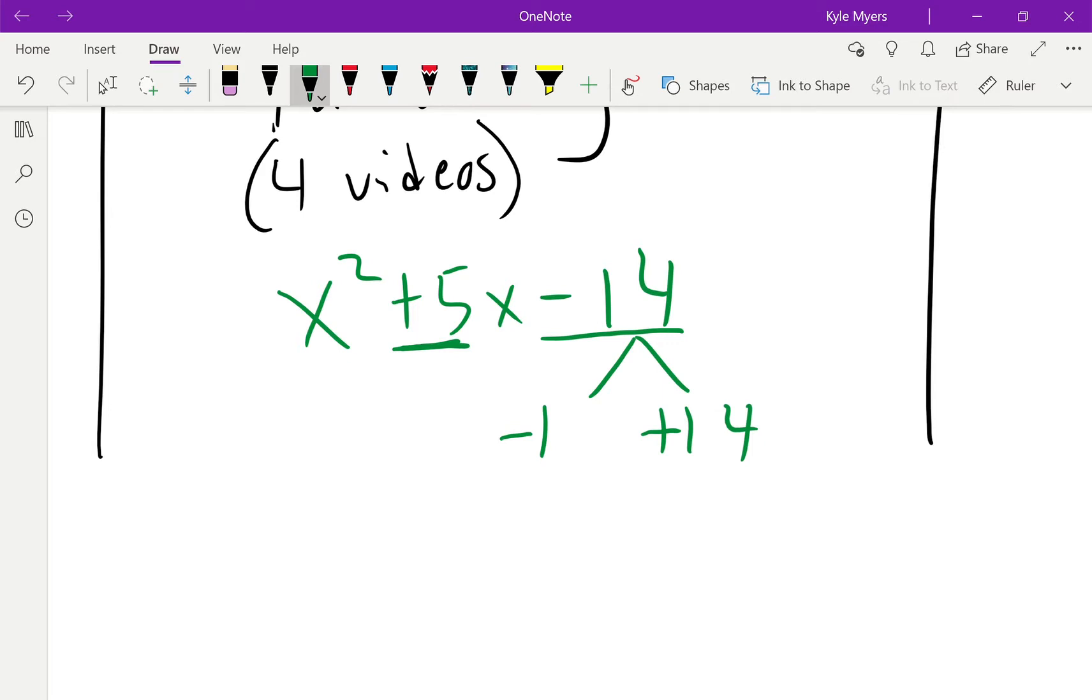There's only one other group of things that multiply to give you 14, and that's 2 and 7. The 7 has to be positive and the 2 has to be negative. Negative 2 times 7 is negative 14, so that multiplies to give me the last number. The other check is negative 2 plus 7 is positive 5, which gives me the middle number. I just add an x to the front of that, x to the front of that, add some parentheses, and we're good to go.